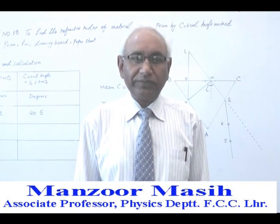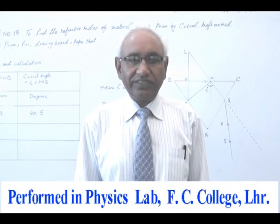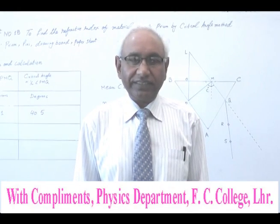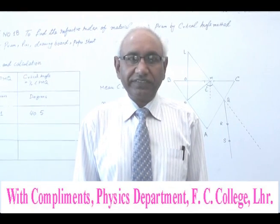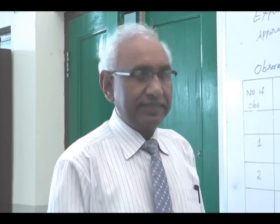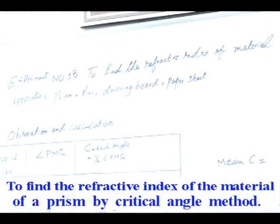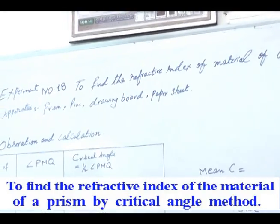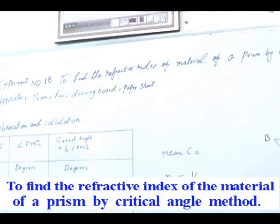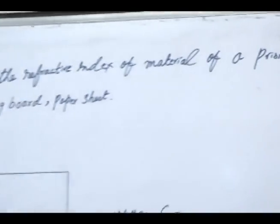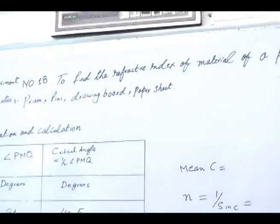Experiment 18 on page 67 in the practical notebook — the left side page of the same experiment I am going to perform. This is an experiment for intermediate students about finding the refractive index of a material. In this case, we find the refractive index of glass by the critical angle method. The apparatus required includes a prism.